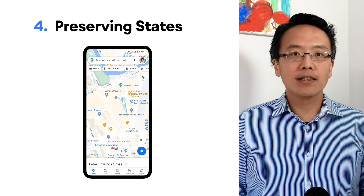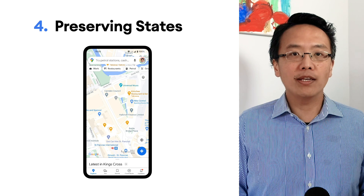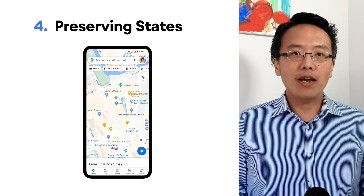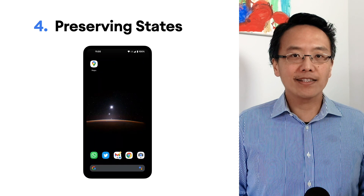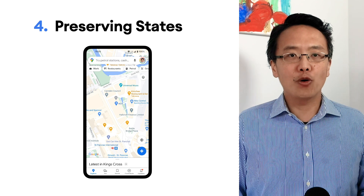Last but not least, sometimes preserving the exact state of the app rather than going to the home screen is the correct thing to do on resumption. Imagine when the user accidentally exits or switches apps to get a piece of information they need to fill out a form. On resumption, if the user switches back quickly — say within a few minutes — the app should resume to the exact state as before. If the user resumes at a later time, the app developer may decide to take the user to the default home screen or resume to the last state, depending on the context of the app.